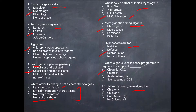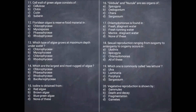Next question: Chlorophyceae, which is green algae — we also get chlorophyll A and chlorophyll B. So the correct answer is C, both A and B.